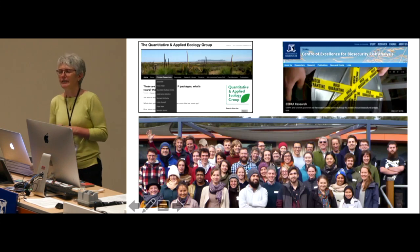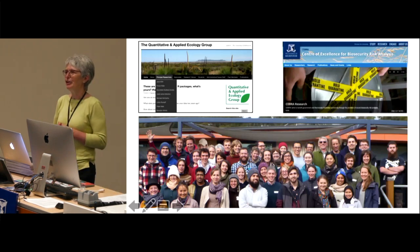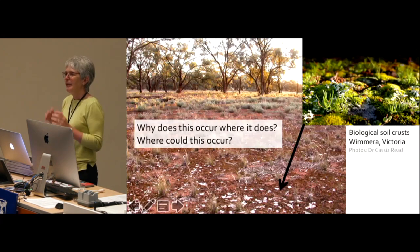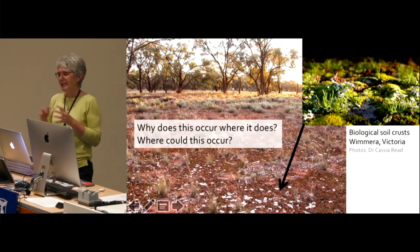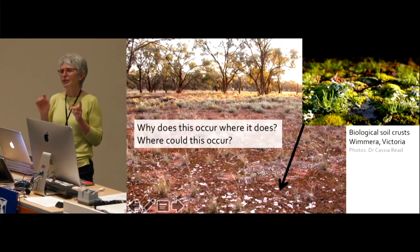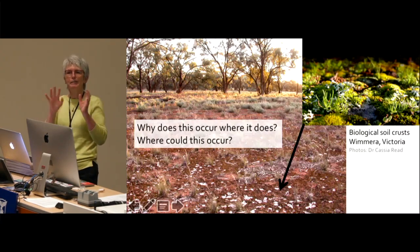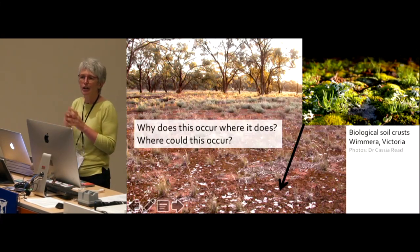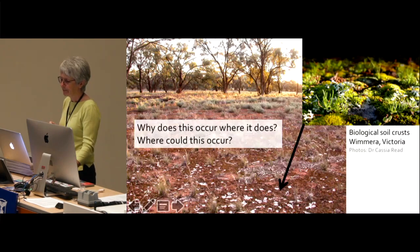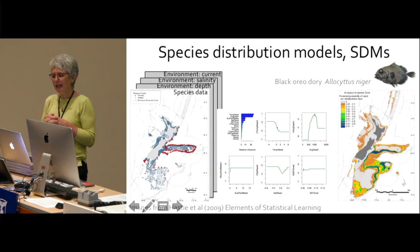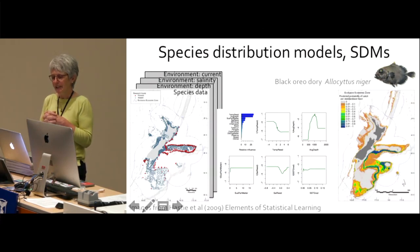I'm from the Quantitative and Applied Ecology Group at Melbourne University and I also sit within the Centre of Excellence for Biosecurity Risk Analysis. My research focuses on what we call species distribution models — models that help us answer some of the fundamental questions of ecology, like why does a species occur where it occurs, or where could it occur? These are statistical models relying on the idea that environment largely affects where species occur.